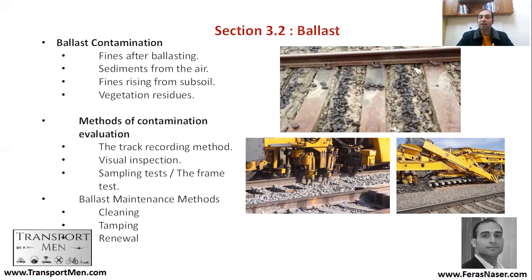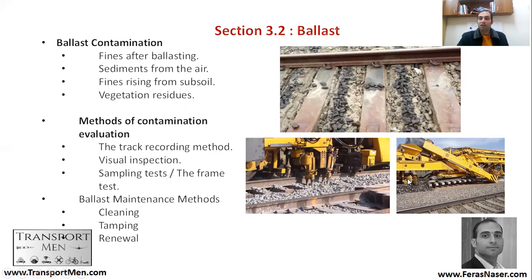How can we assess ballast defects? Either you send track recording trains and get measurements of twist, gauge, settlement, and their standard deviation, or you send visual inspectors to check for defects, or you do sampling tests — taking a cylindrical sample and testing compressive strength. If a problem is found, you can clean the ballast using a cleaning machine, do tamping, or do full renewal of the ballast.